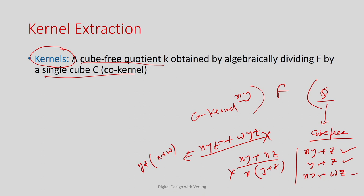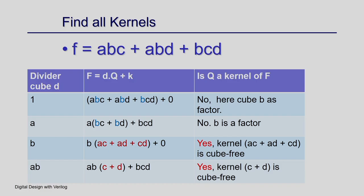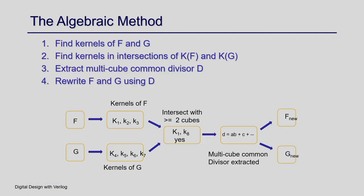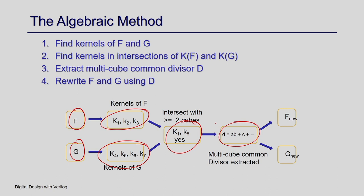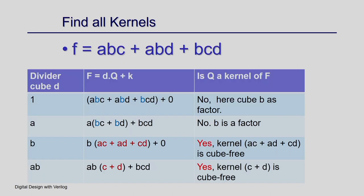The Bighton-McMoulin theorem says: identify all kernels for function f and all kernels for function g, take their intersections, and the common sub-expression will appear in the intersection of these kernels — called the multi-cube common divisor. We will go into more detail on how to identify kernels manually.